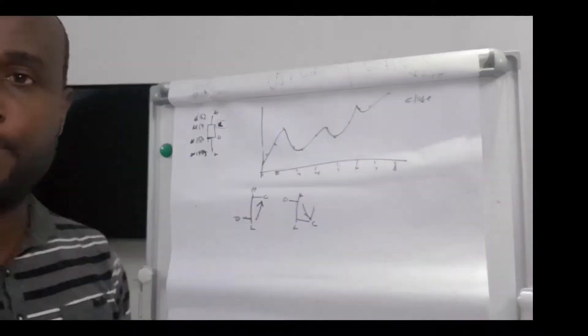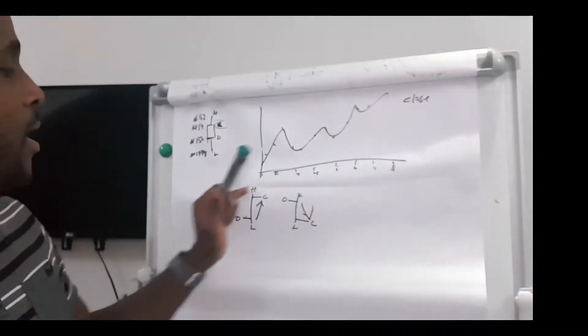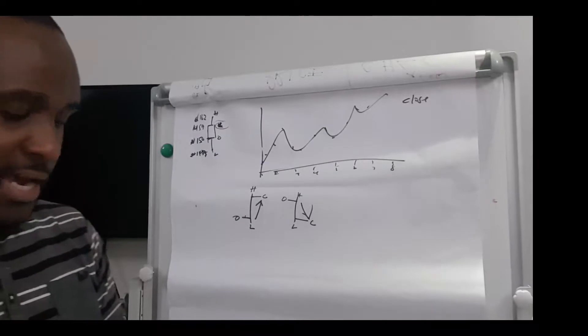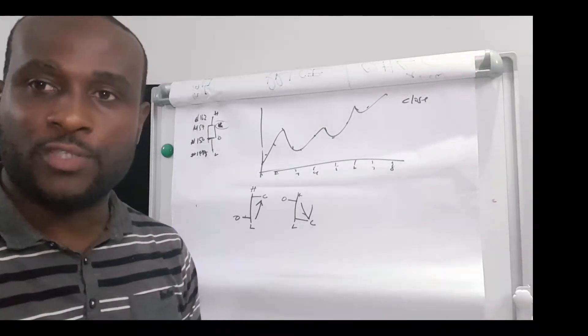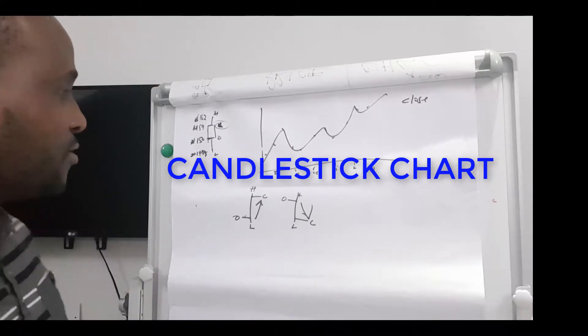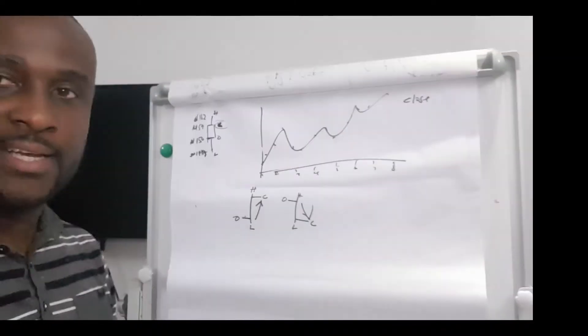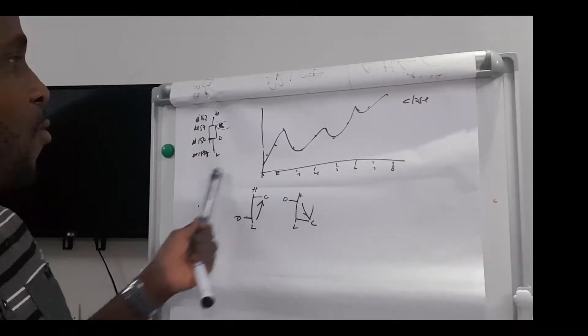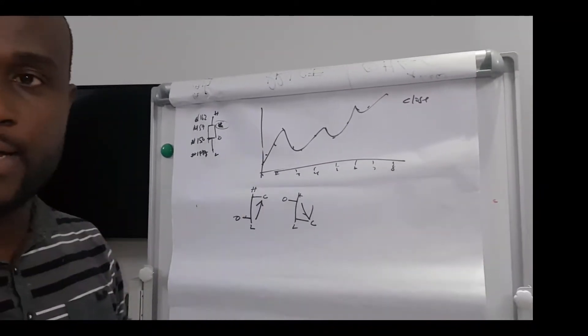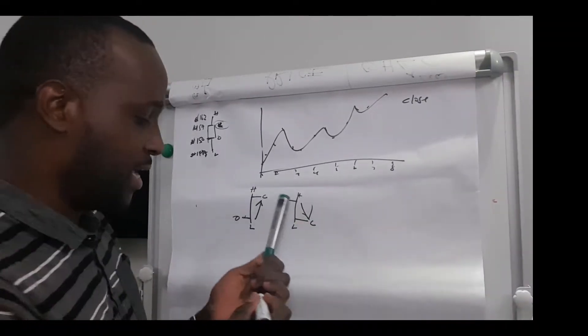The kind of chart I prefer to use is the candlestick chart. The candlestick chart is similar to the principle behind the bar chart, and it's more like what we experience with the lady that sells tomatoes.